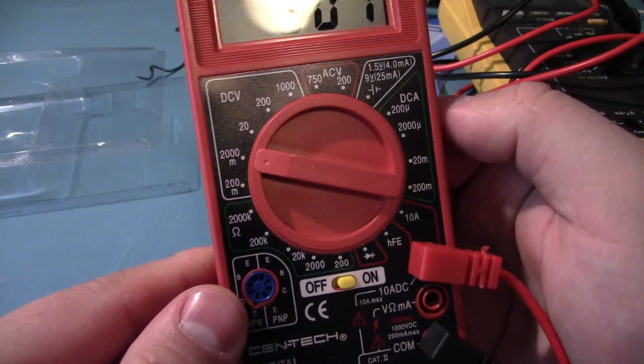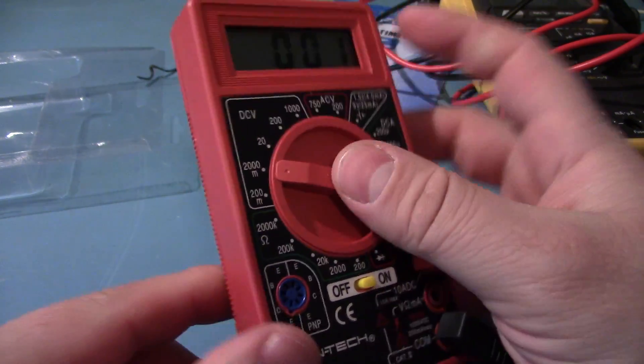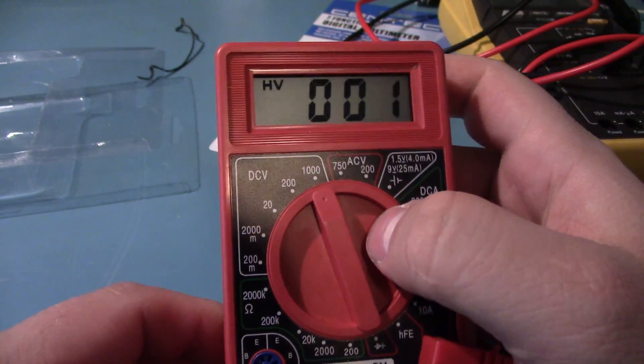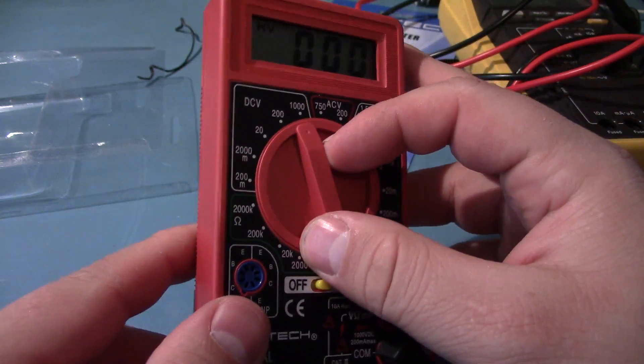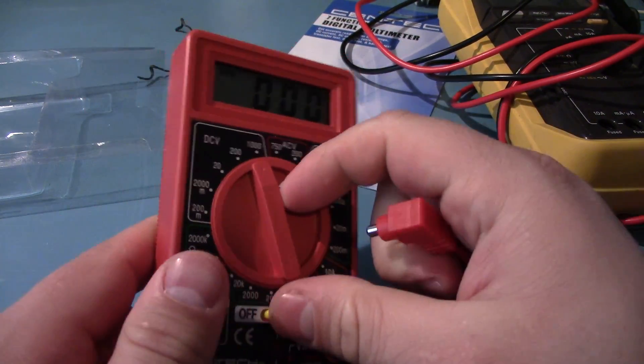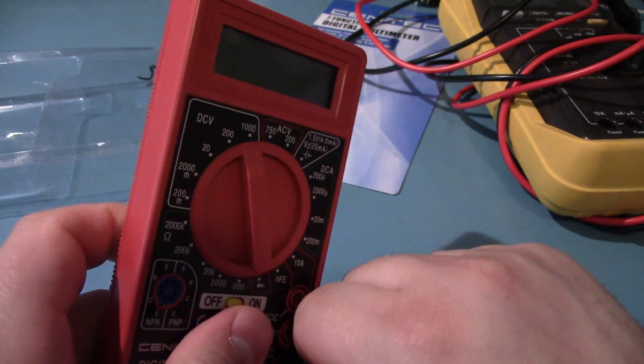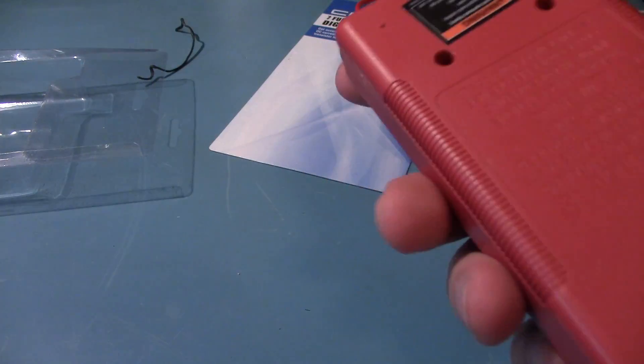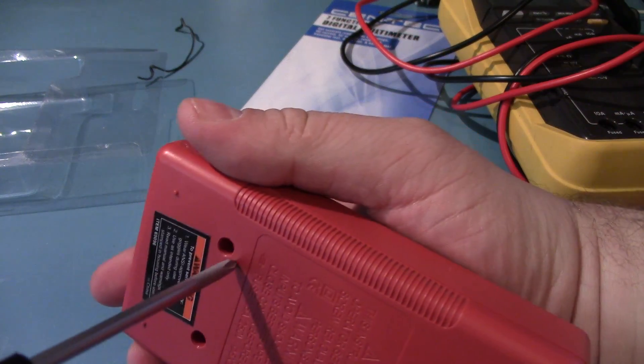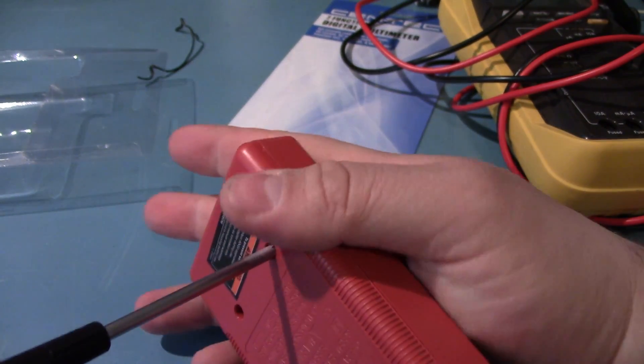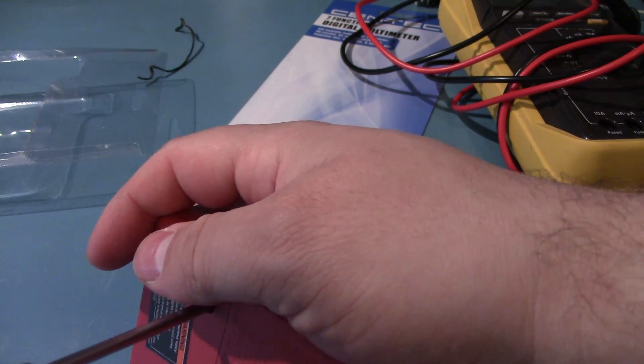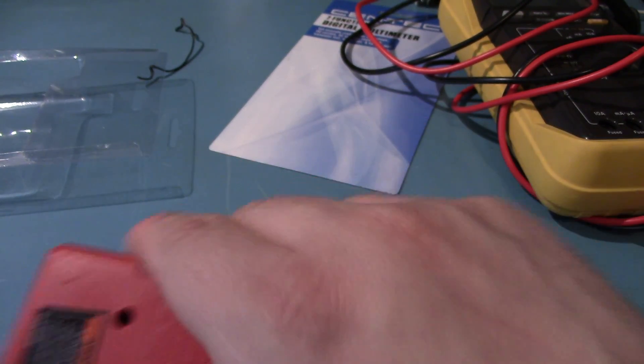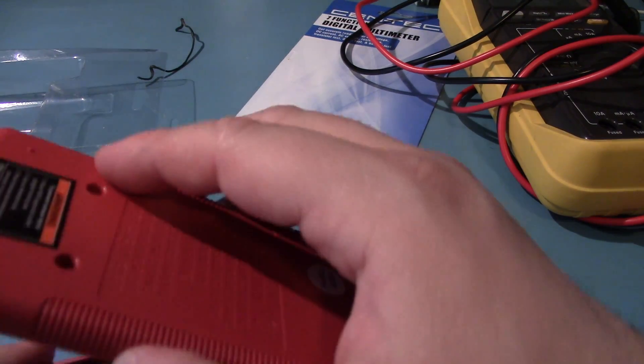I would not recommend plugging this into a wall outlet, but it does apparently go up to a thousand volts. I don't trust it. Don't get me wrong, I do believe that this thing will show somewhat accurate voltages. If you put in five volts, I don't doubt that it will show five volts, mostly because it doesn't really have any digits to show any details.